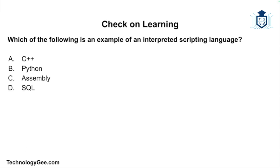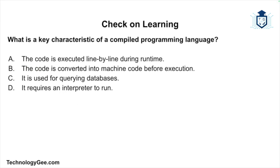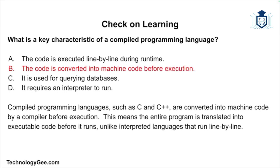Now let's do some check on learning. Question one: which of the following is an example of an interpreted scripting language — C++, Python, Assembly, or SQL? The correct answer is Python. Python is an interpreted scripting language, meaning its code is executed line by line by an interpreter at runtime. Question two: what is a key characteristic of a compiled programming language — the code is executed line by line during runtime, the code is converted into machine code before execution, it is used for querying databases, or it requires an interpreter to run? The correct answer is the code is converted into machine code before execution. Compiled languages such as C and C++ are converted into machine code by a compiler before execution, unlike interpreted languages that run line by line.